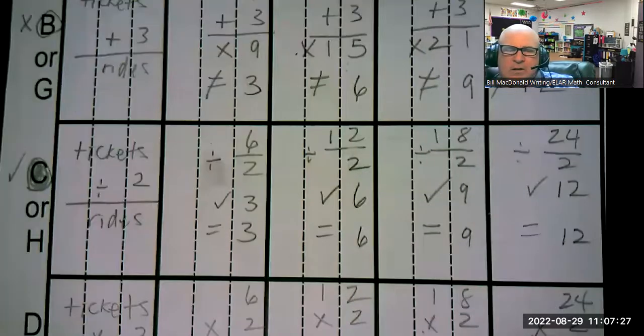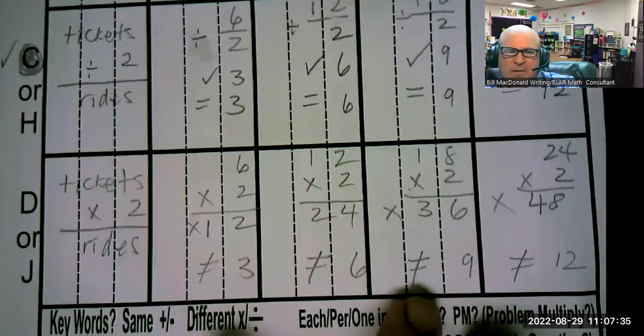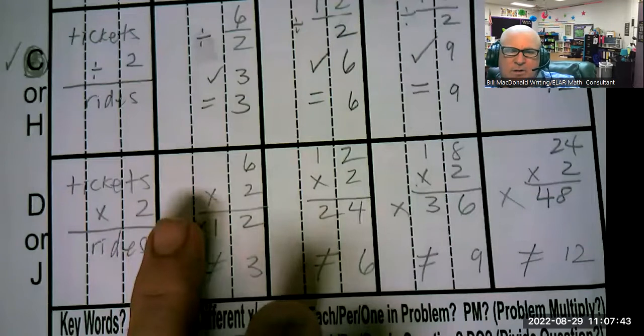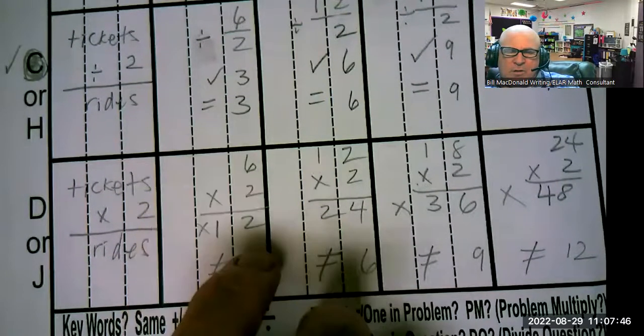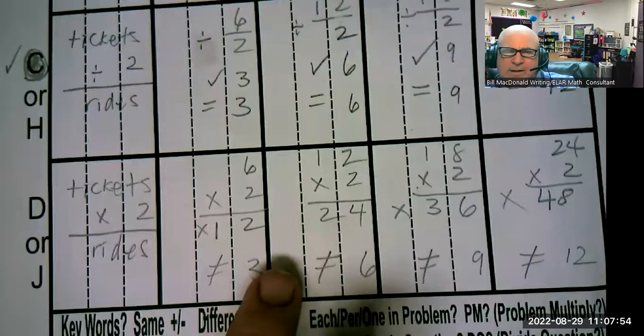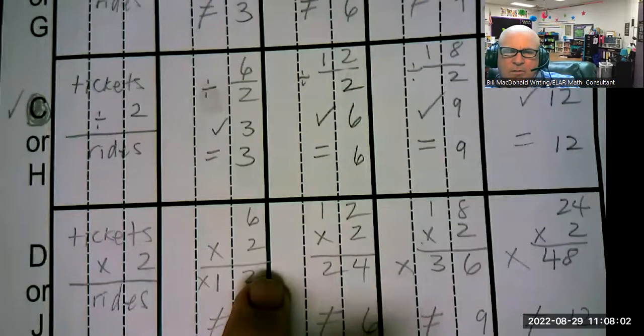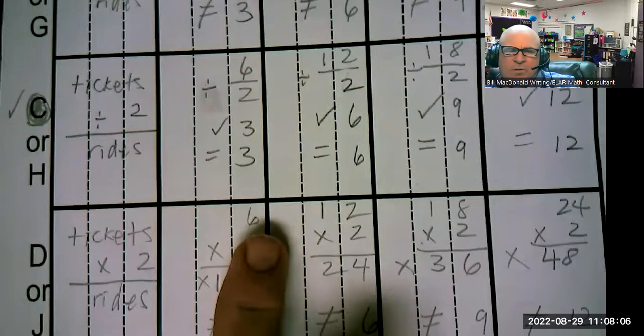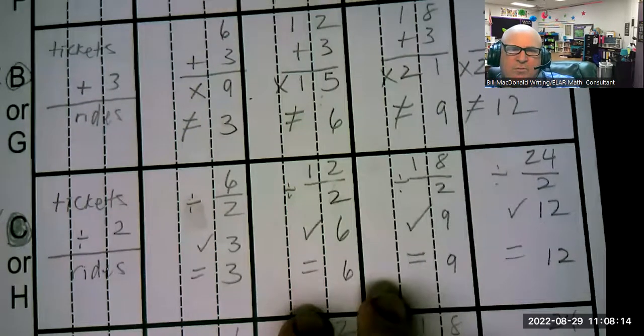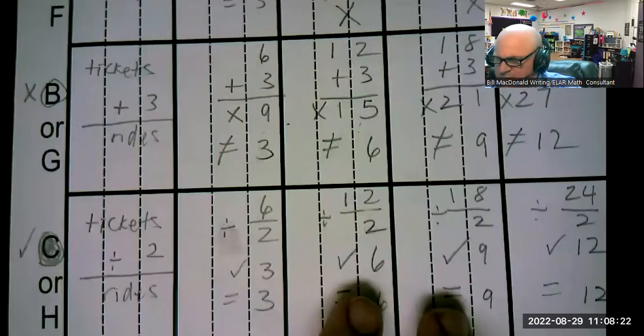Letter C, when you take the tickets and divide by two, take the dividend, the numerator, and divide it by two, the denominator, for all four you get the same answer that is in the column called rides. Again, not guess and check because there's no guessing having to be involved because they actually give you the numbers to plug and the operations. That's why I call it plug in the numbers and then apply the operation with the numbers.